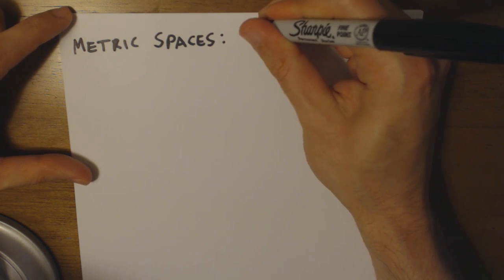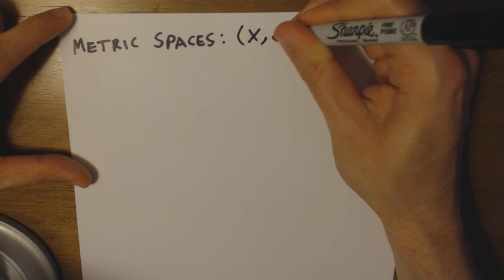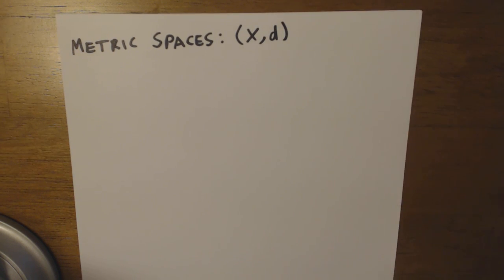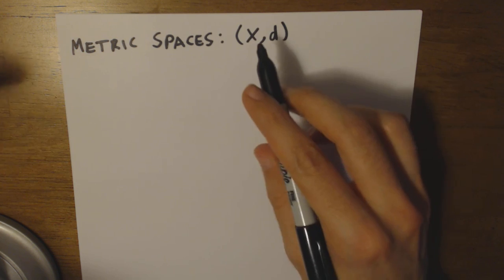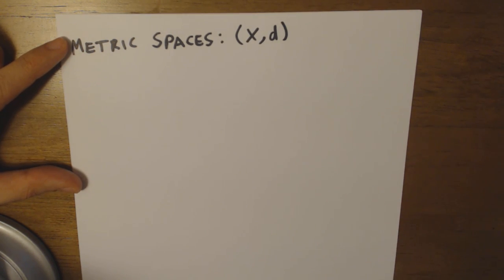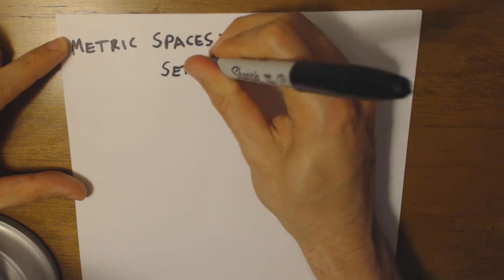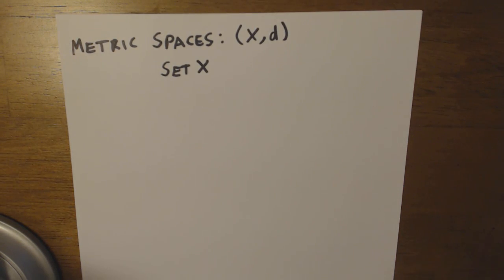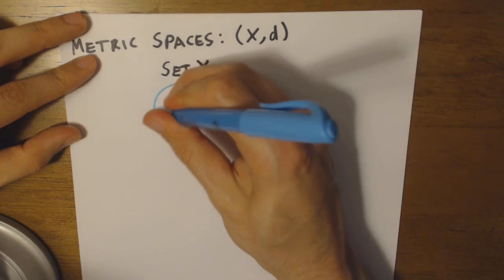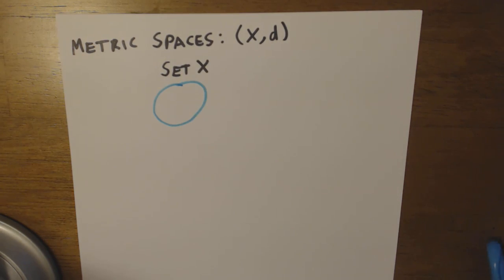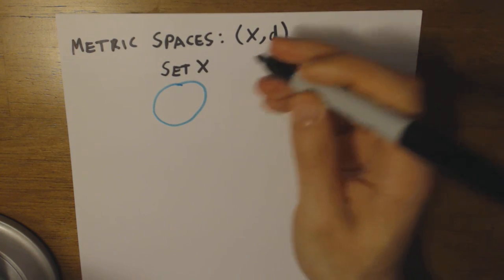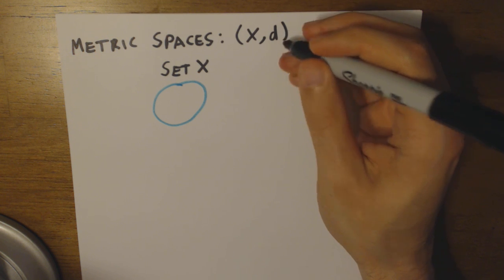A metric space can be represented like so. All this means is that we have a set X, any set we choose. Let me draw this in another color. And we also have this set coupled with what we call a metric.